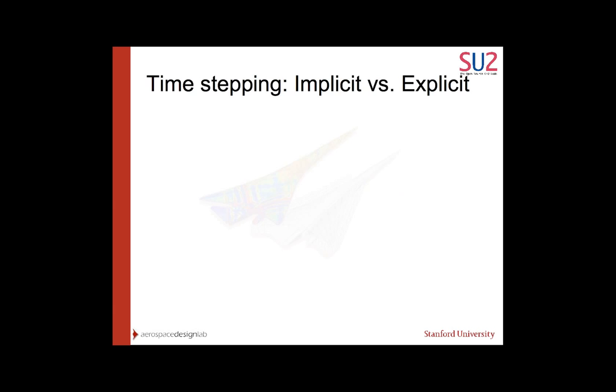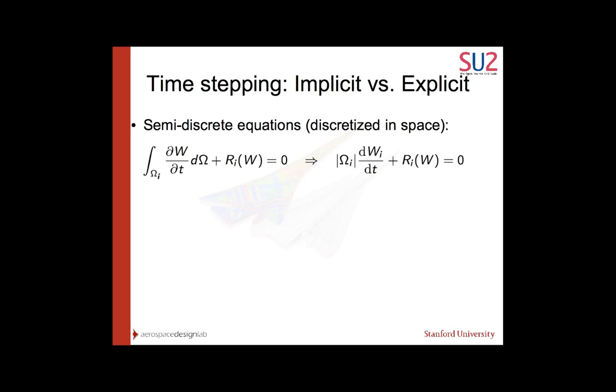The next thing we have to do is time stepping. At this stage, we've computed our residuals. We've computed our convective residuals and our viscous residuals, so we can compute r of w. Now, r of w in general will not be zero. So we want to drive it to zero. We want to compute a correction to w that at the next iteration will make r of w smaller. Here are our semi-discrete equations, which just means they're discretized in space but not in time. I've left the time derivatives here, but these terms are now discrete. Let's take this integral here and convert it into a time averaged quantity.